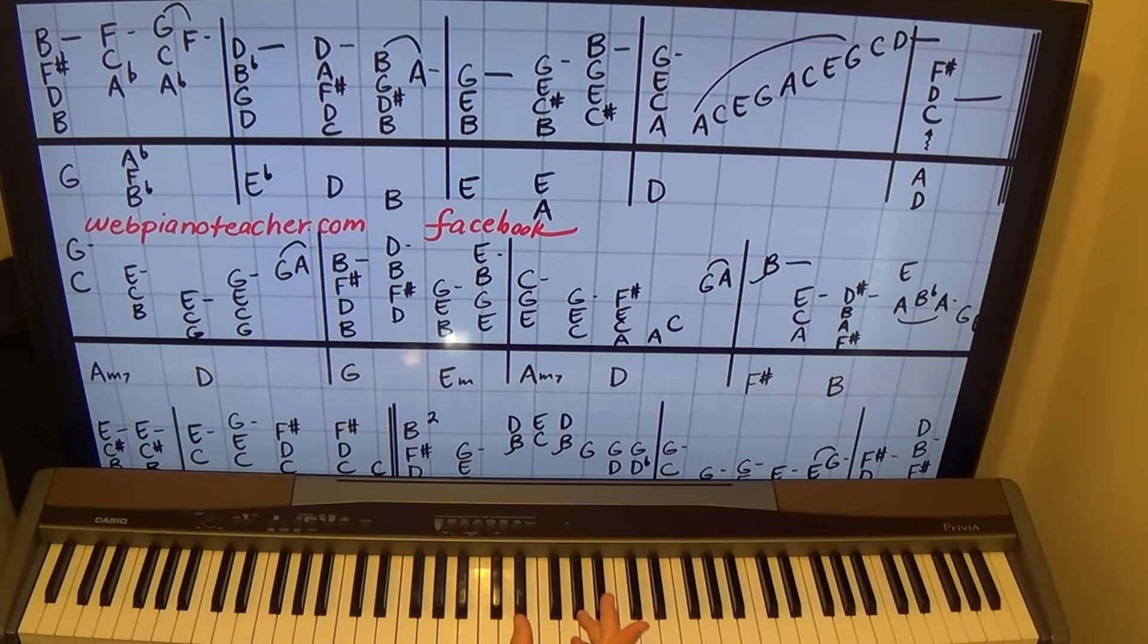So the next measure we have an E minor. B, E, G on the right. Left hand on E octave. 1, 2, and then 3. Beautiful chord.